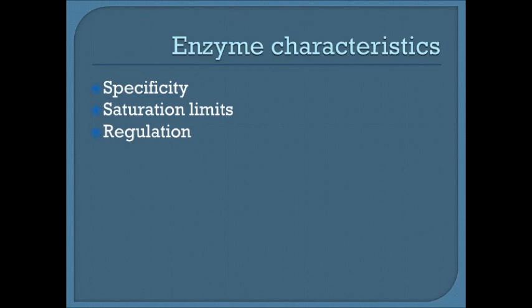Enzymes have specificity — each enzyme only catalyzes one reaction. They have saturation limits: the substrate concentration required to reach the maximal rate of reaction; beyond that, the reaction cannot run any quicker because there aren't enough enzymes. Enzymes can also function in regulation — certain environmental conditions can turn them on or off. Enzymes function in ideal conditions with a specific pH or temperature, and if anything goes beyond that, they can turn off or denature.